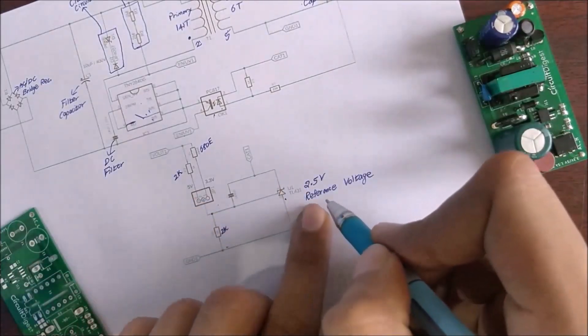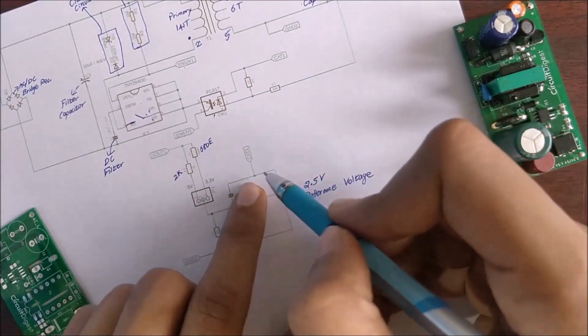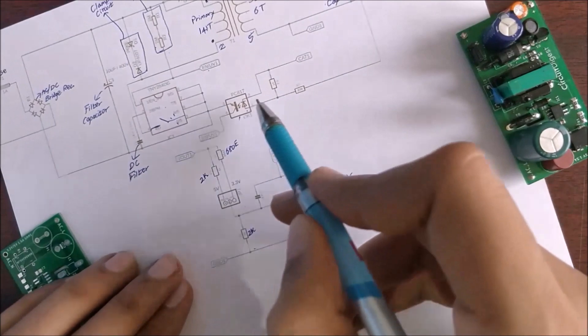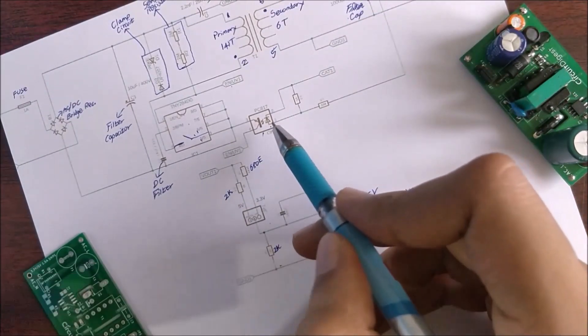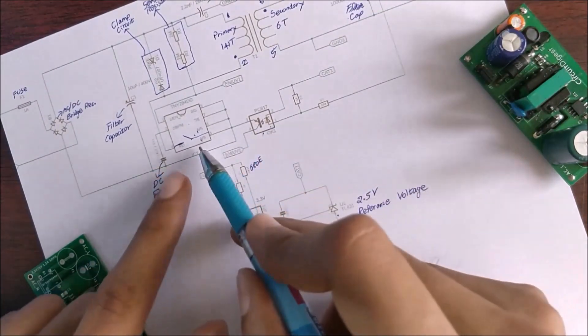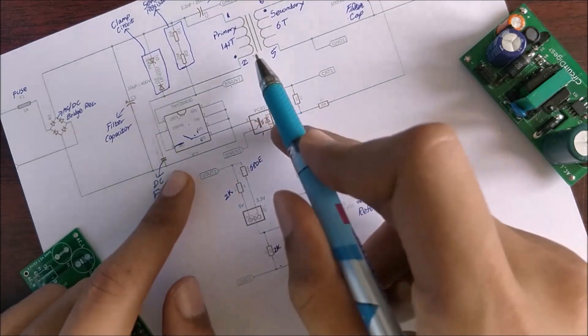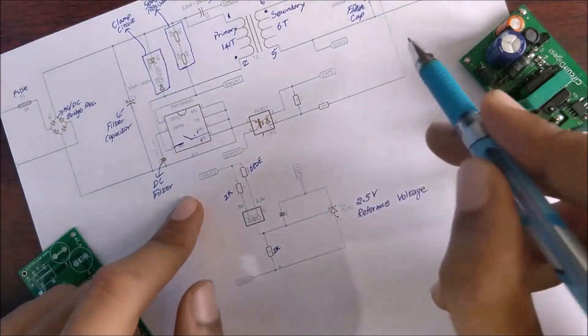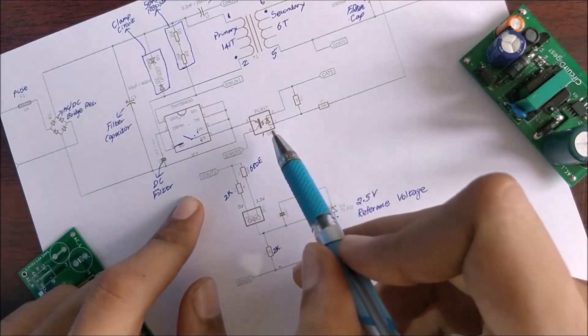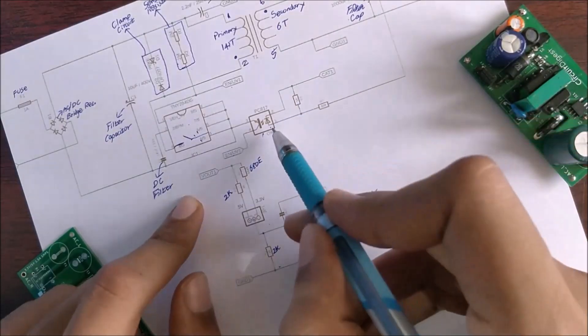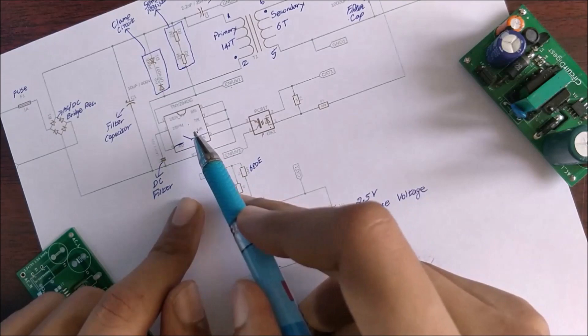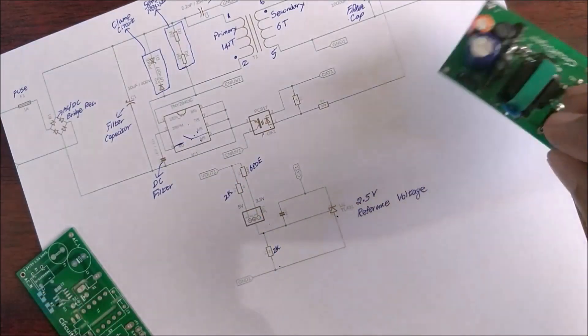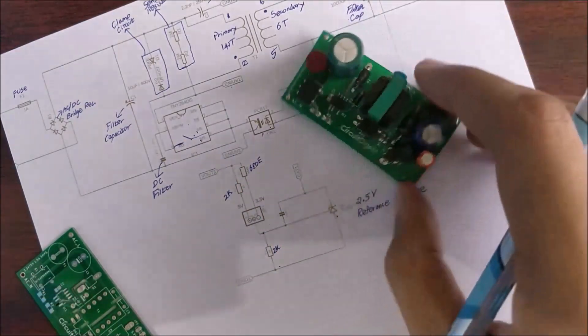Basically it changes the resistor connected to this and the reference voltage will also change. With the help of this reference voltage IC we will be giving signal to the photodiode over here and it will turn on and send the signal to the controller IC asking it to turn on the primary side of the transformer. Similarly if the voltage exceeds this optocoupler will turn off the LED inside it and thus the primary voltage will also go down. So that is it. This is how the entire circuit works.